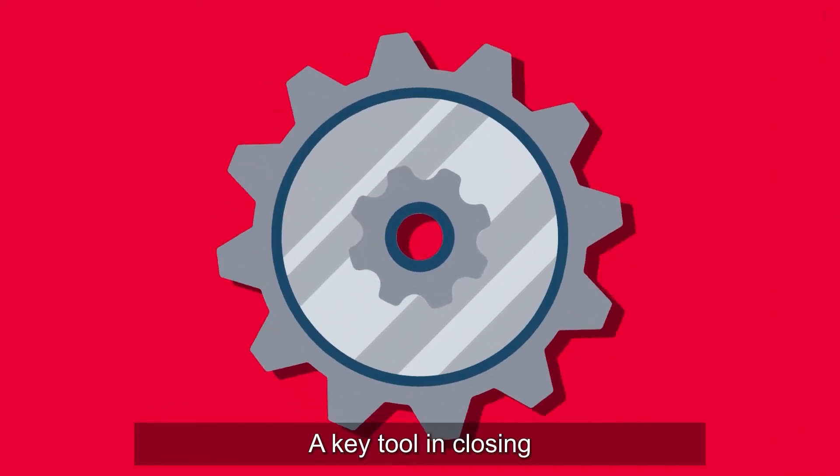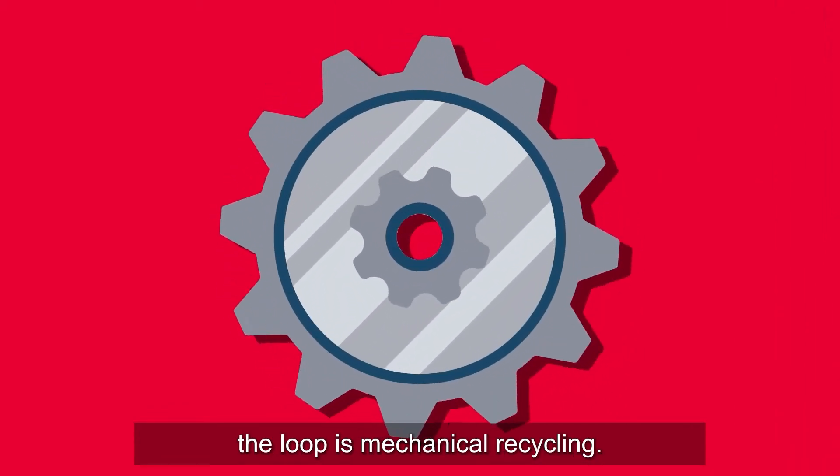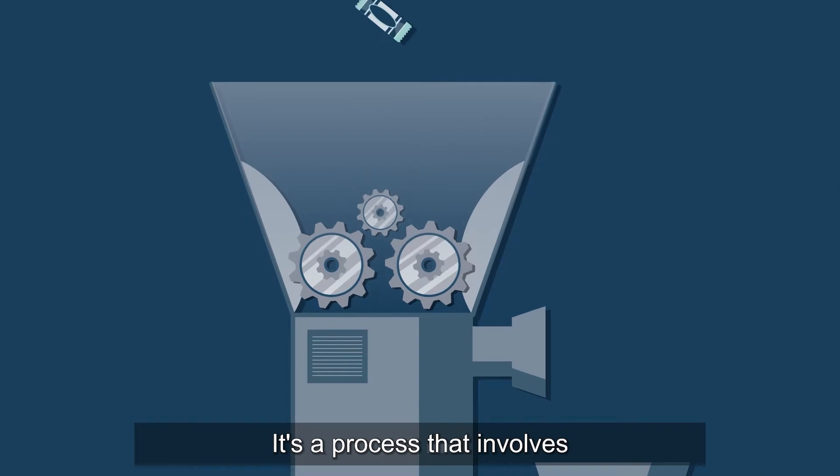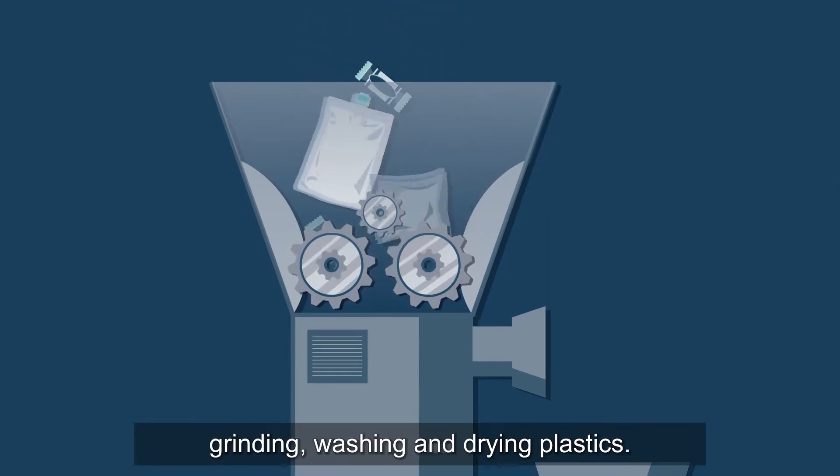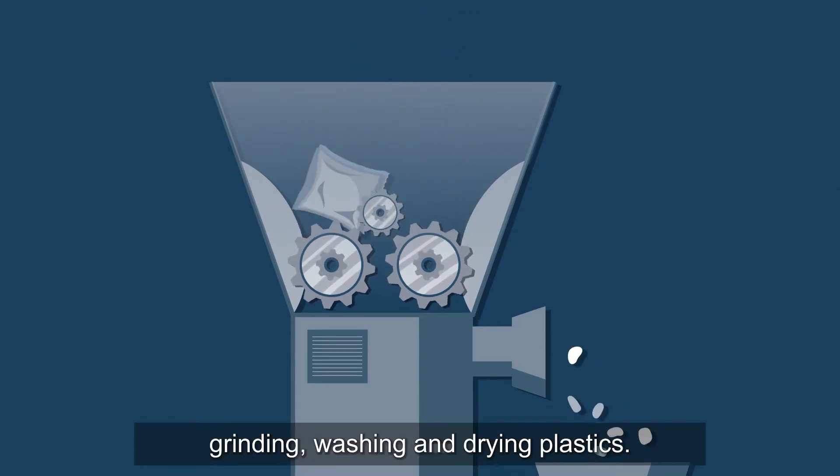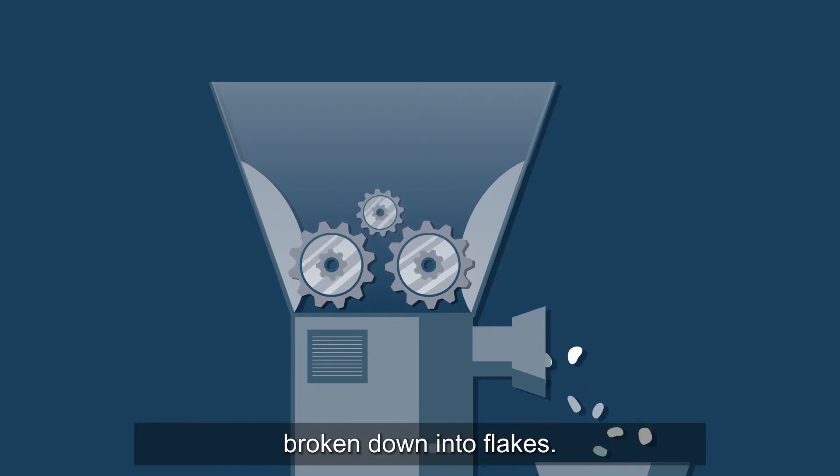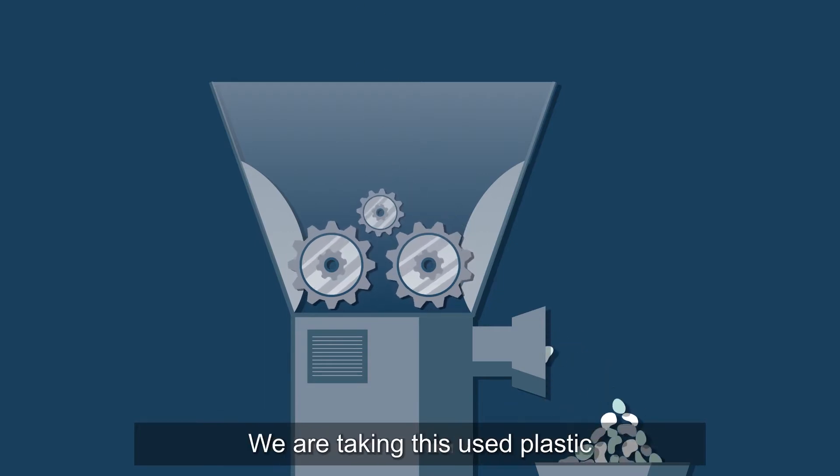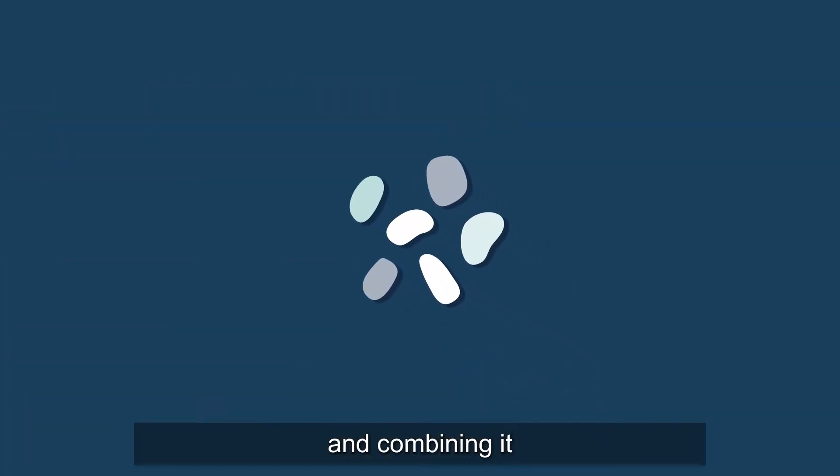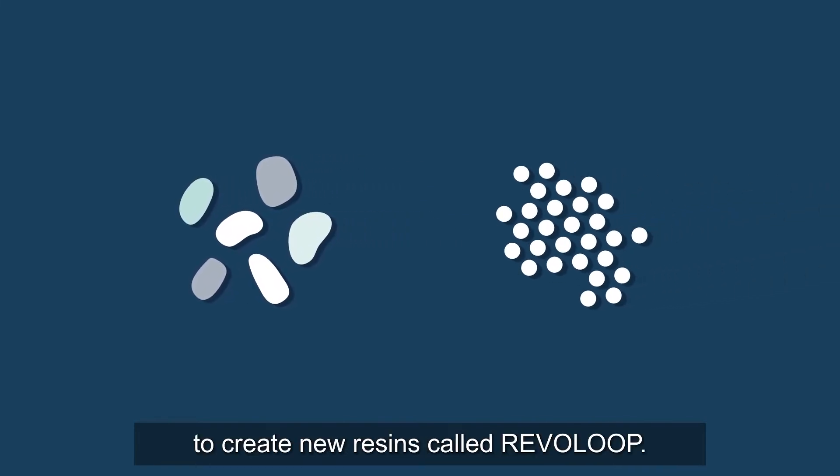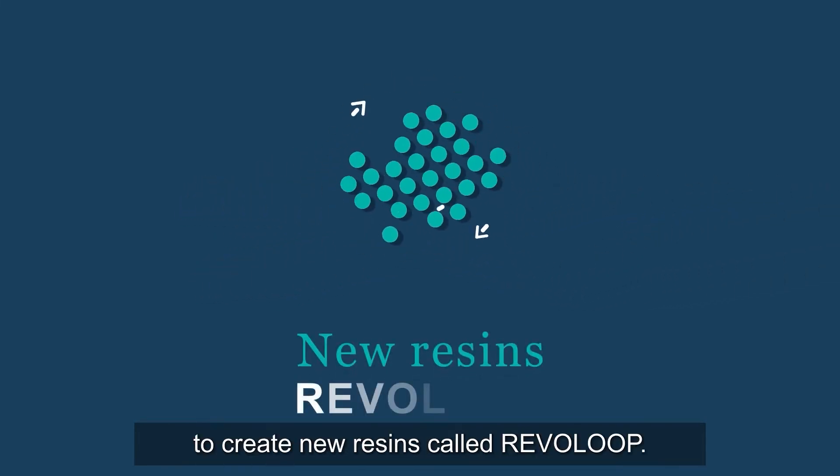A key tool in closing the loop is mechanical recycling. It's a process that involves grinding, washing and drying plastics. The pieces are then broken down into flakes. We're taking this used plastic and combining it with advanced resins to create new resins called Revolume.